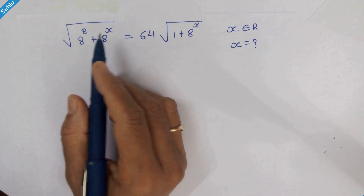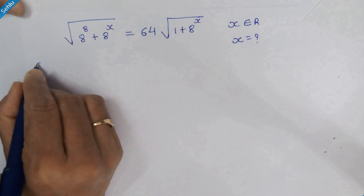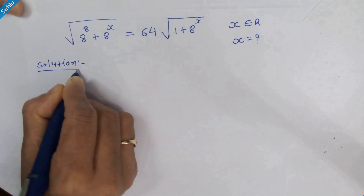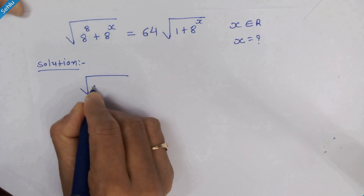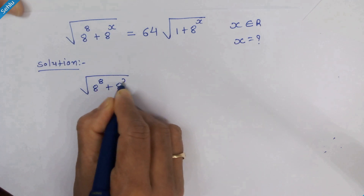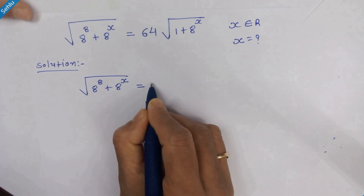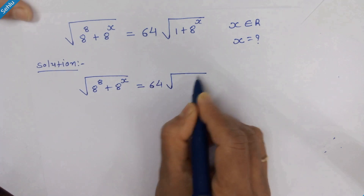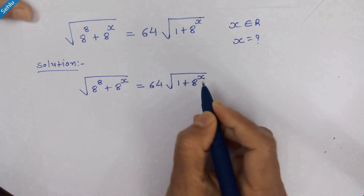Hello friends, let's find the real value of x. Our question is: square root of 8 raised to 8 plus 8 raised to x, is equal to 64 times square root of 1 plus 8 raised to x.